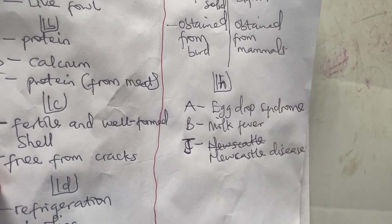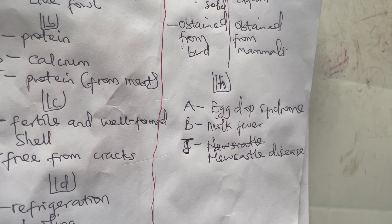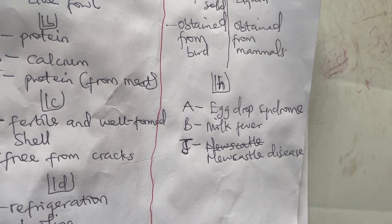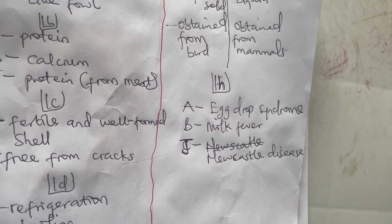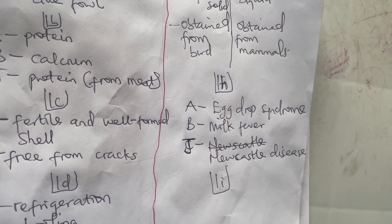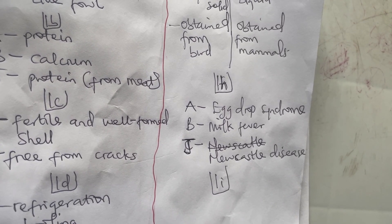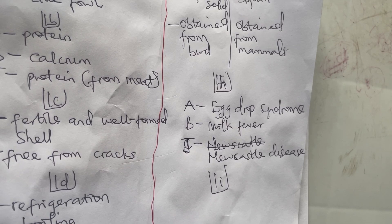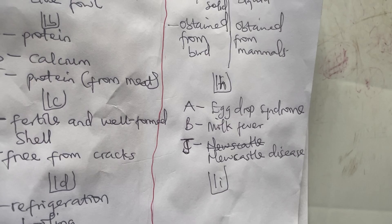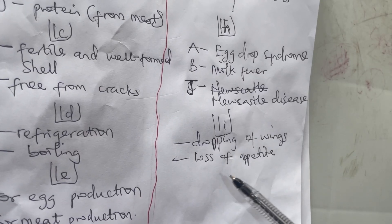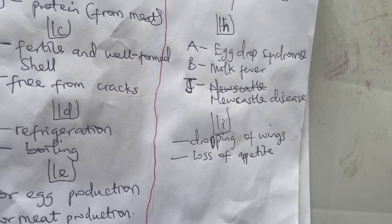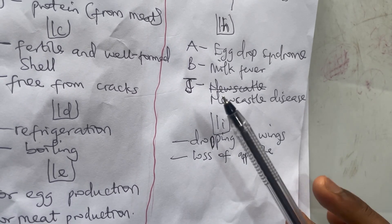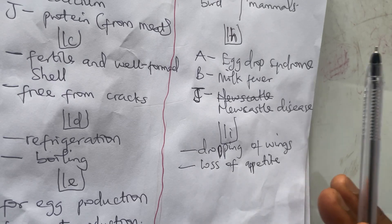Another question they can ask is to state two signs of an unhealthy bird. Number one: there will be drooping of wings — you will see the wings start dropping down. Number two: the bird will lose appetite and will not be able to eat. That is the end of the first category.